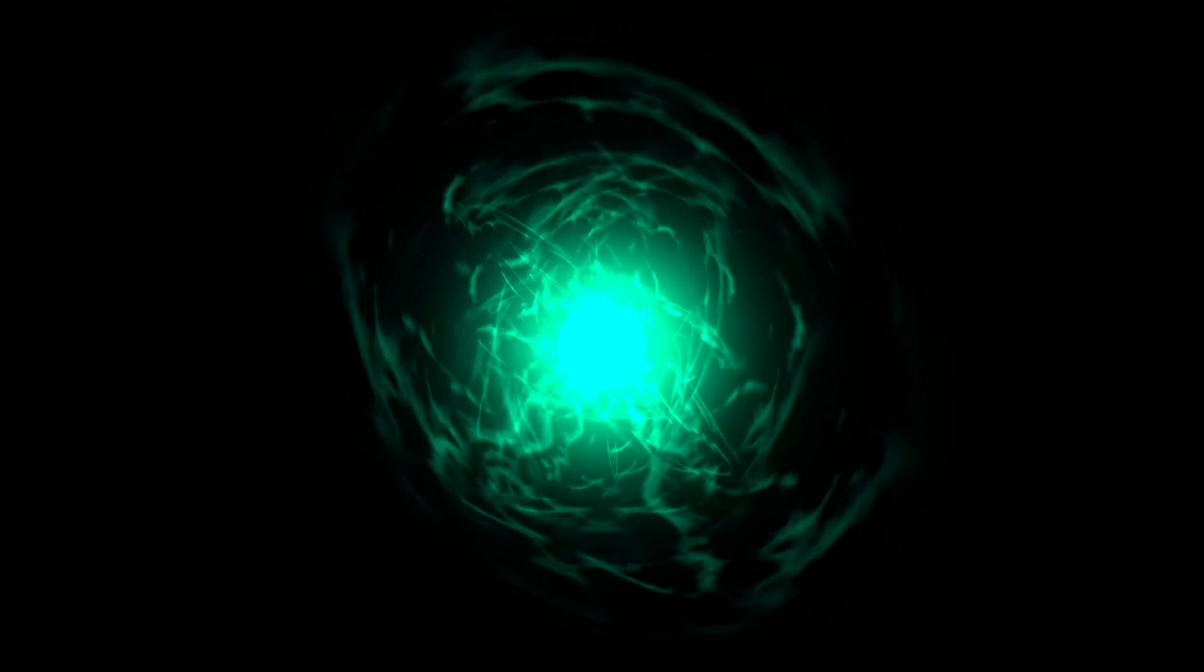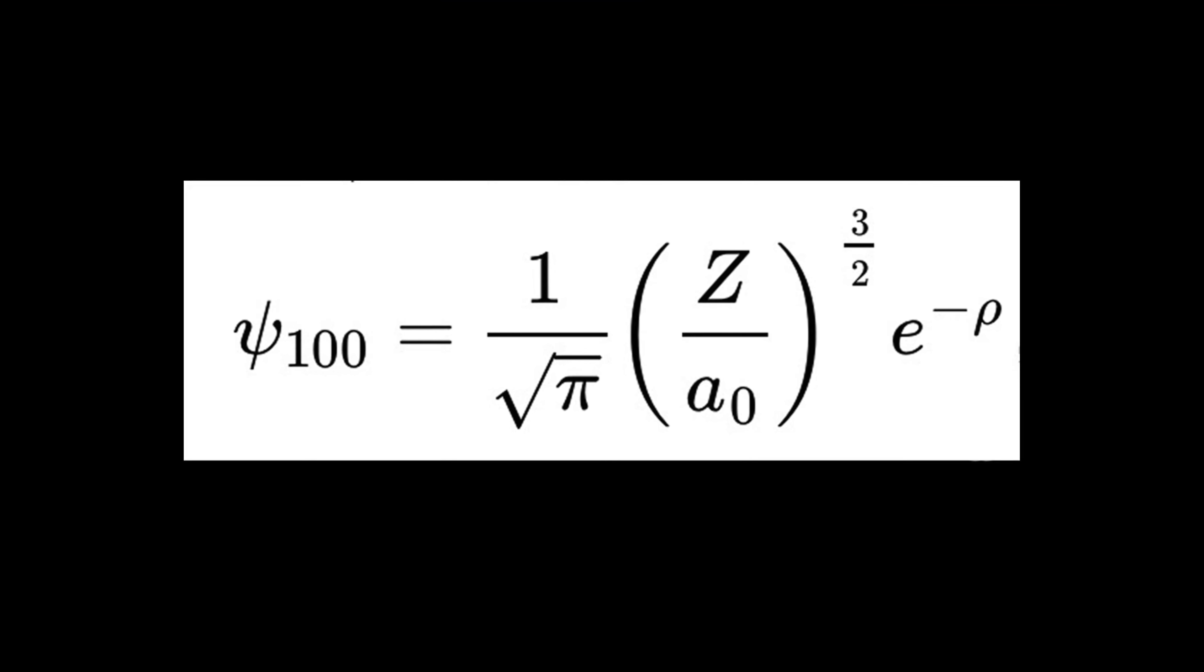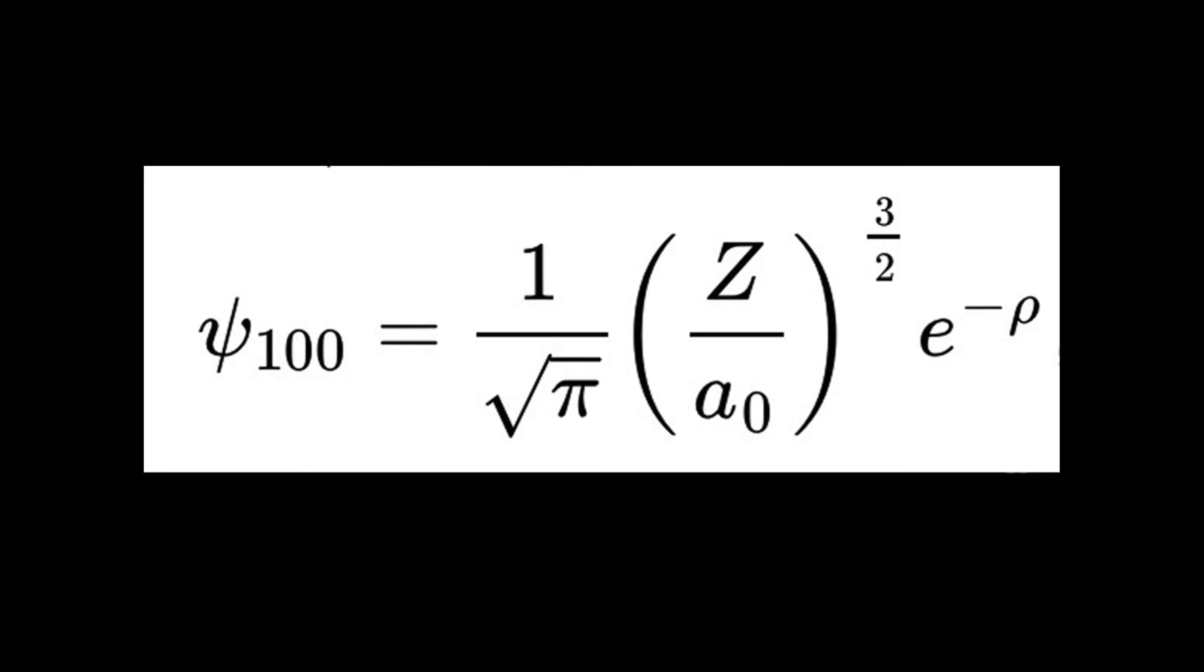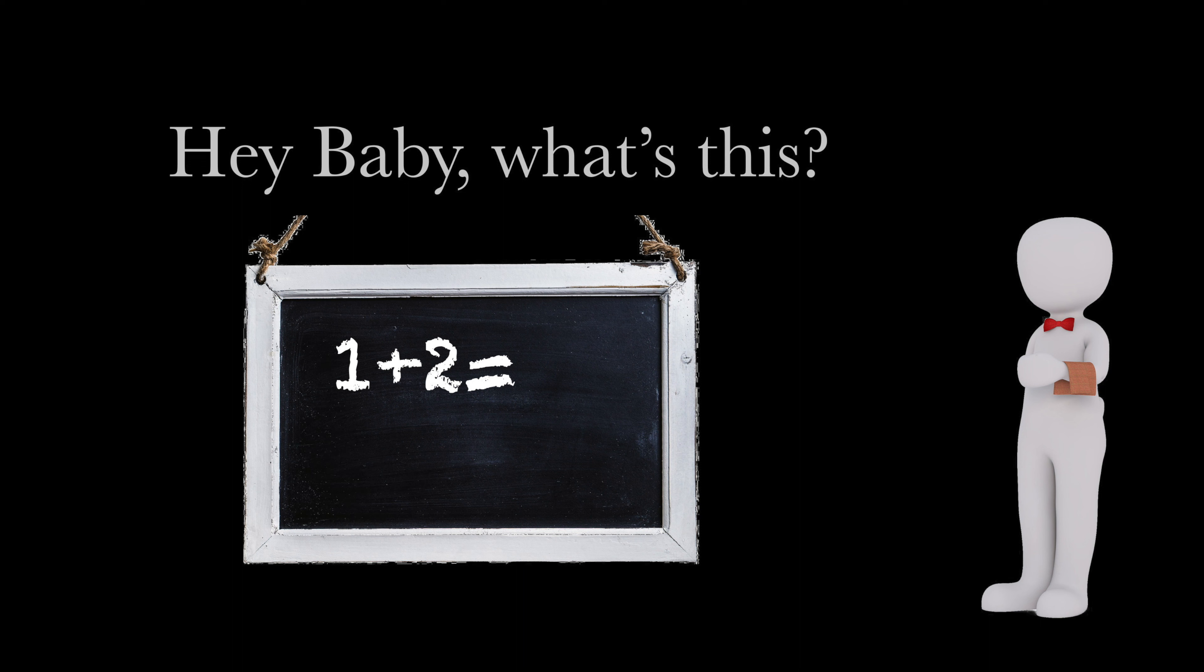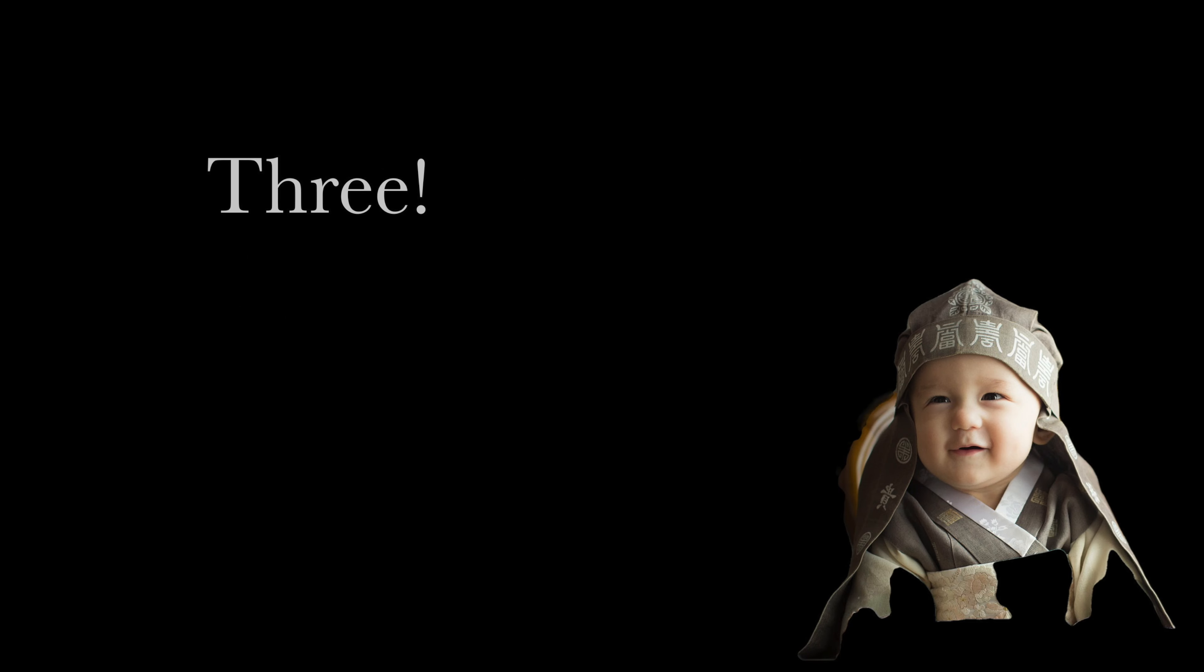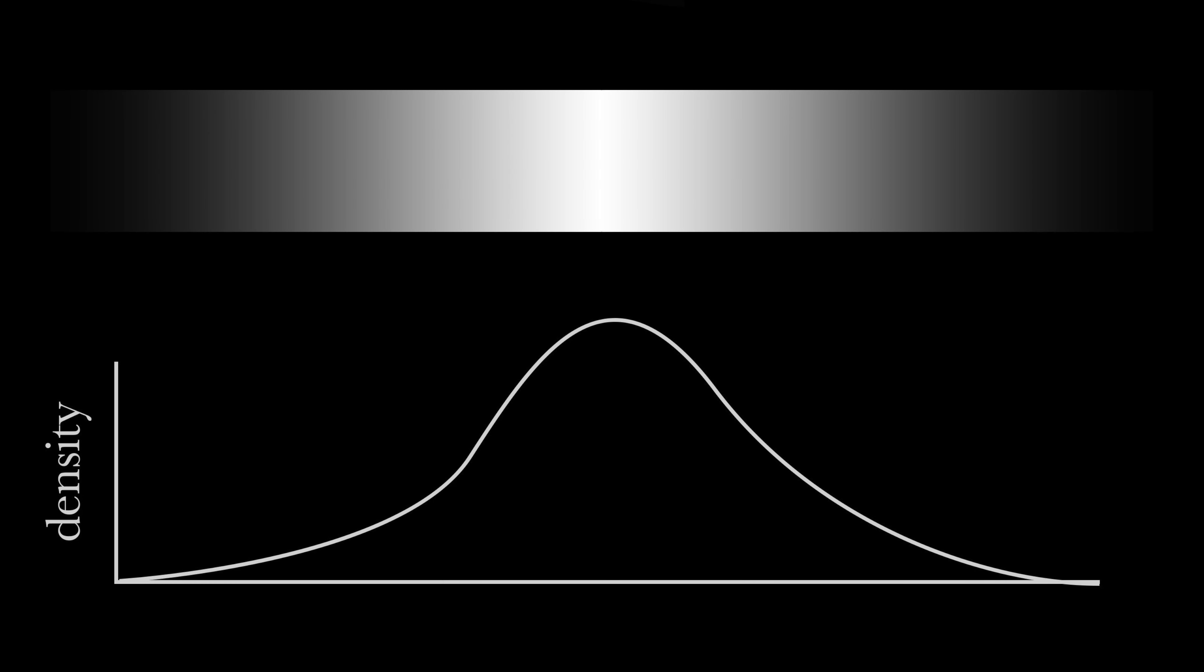An electron's energy exists as a mystical cloud around the atom's nucleus. Scientists describe it by using a probability equation like this. This equation can answer the question: where is the electron? Where the cloud is dense, the chance of finding the electron there is higher than where the cloud is thin.